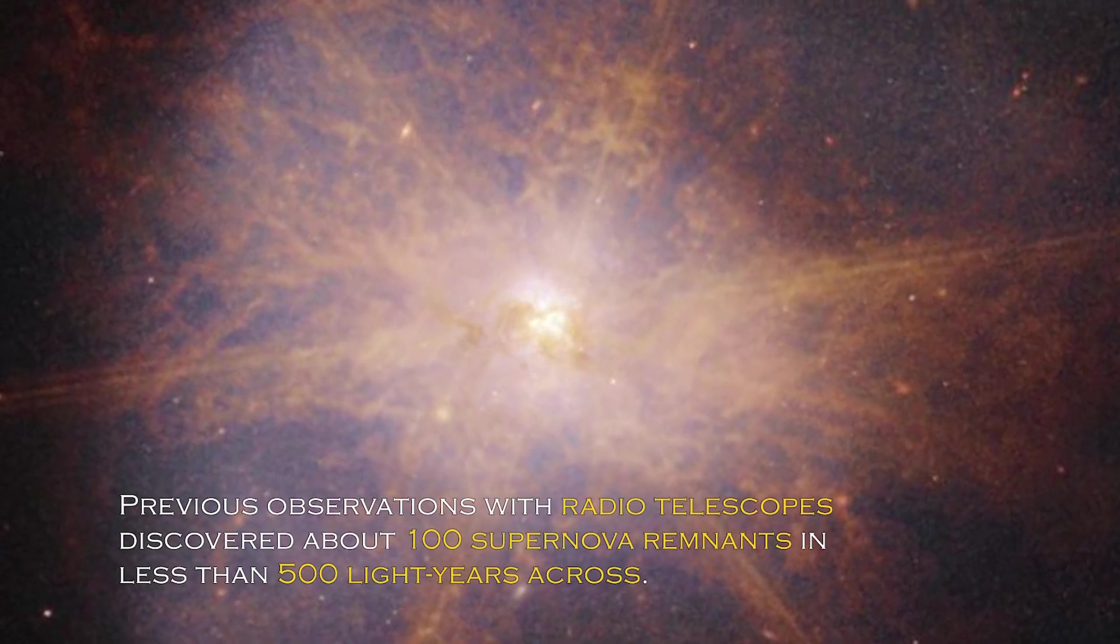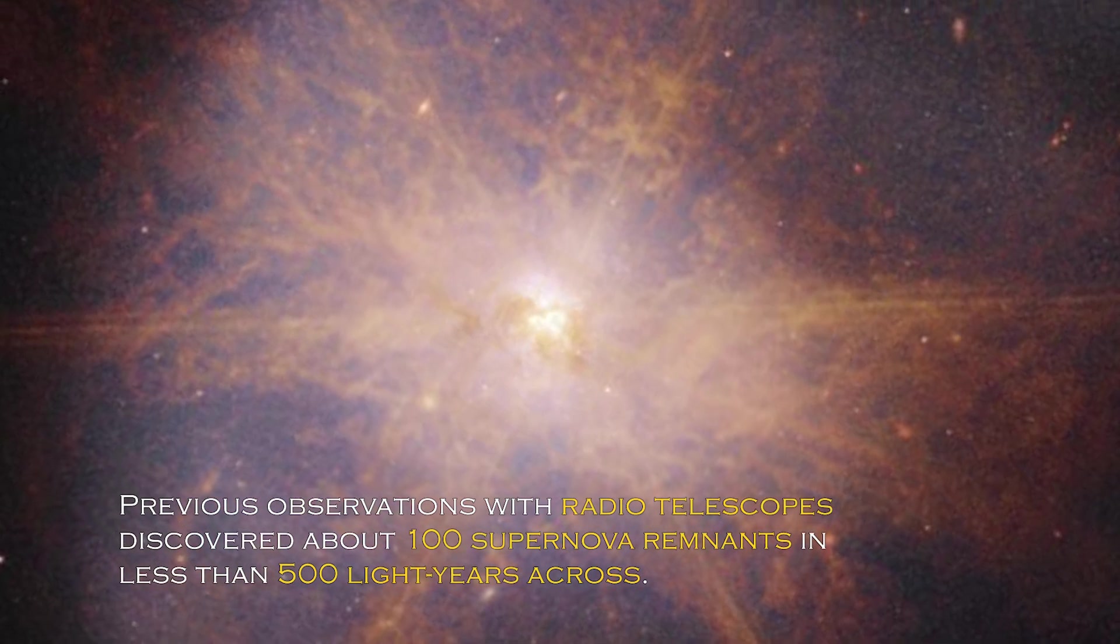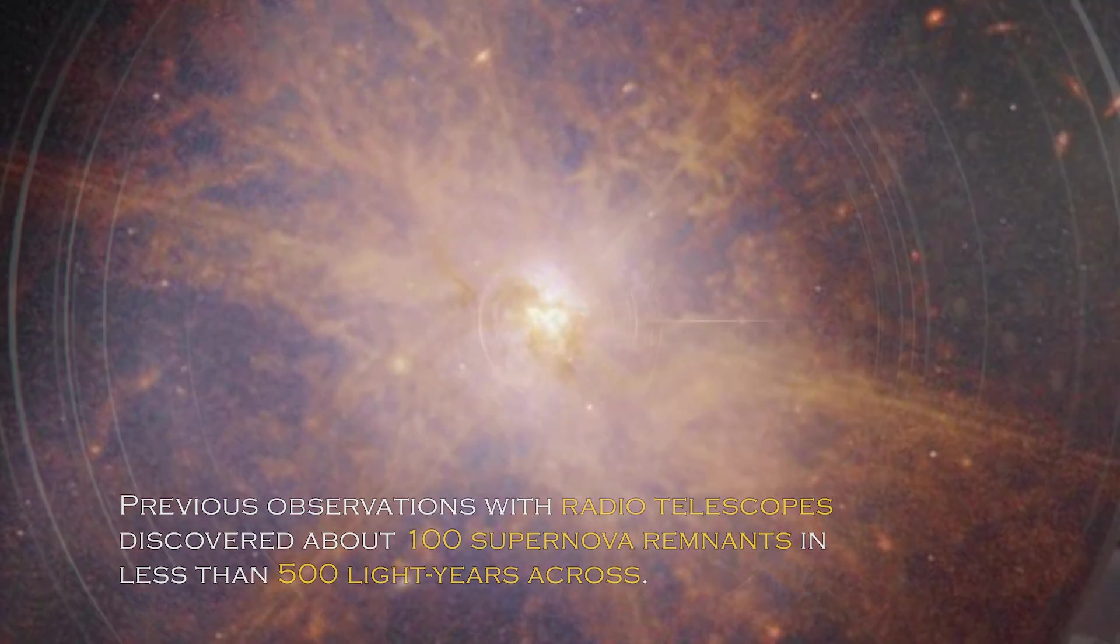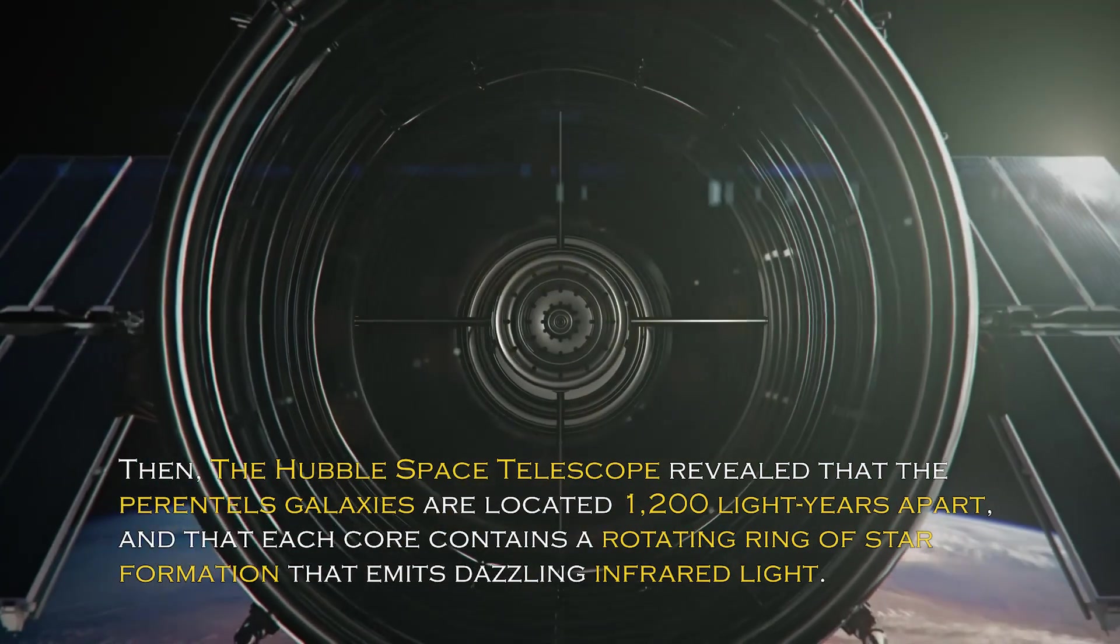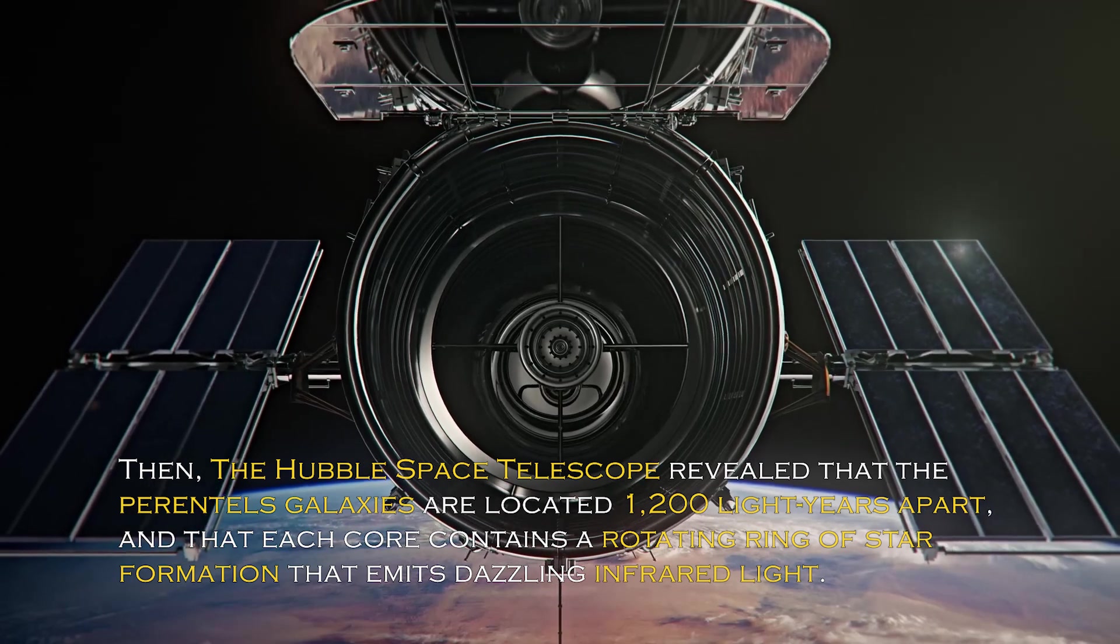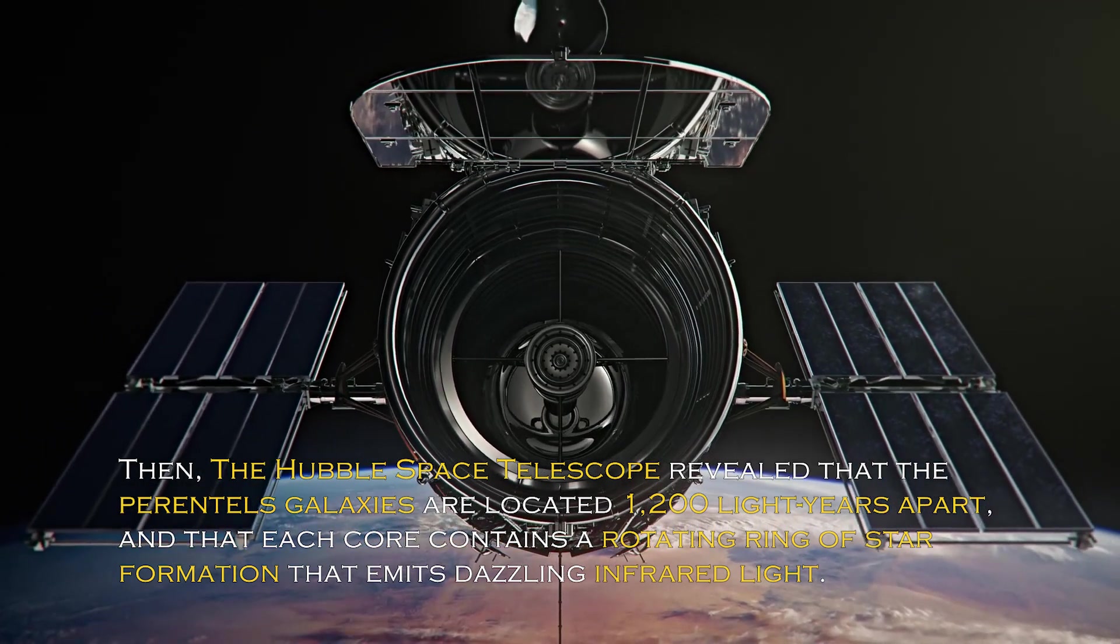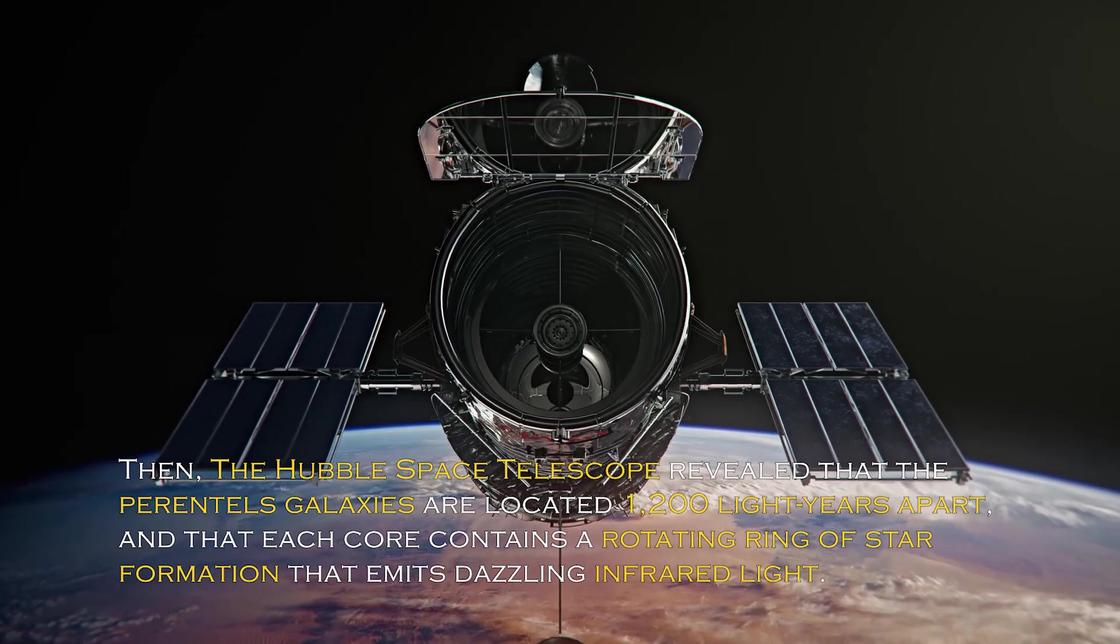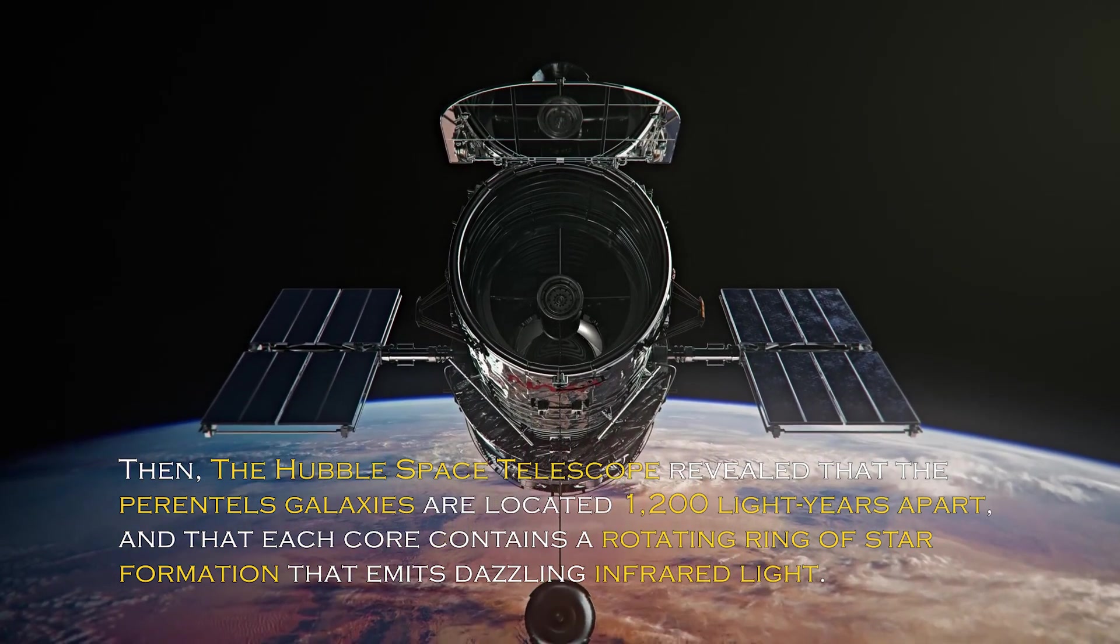Previous observations with radio telescopes discovered about 100 supernova remnants in less than 500 light-years across. Then, the Hubble Space Telescope revealed that the parent galaxies are located 1,200 light-years apart, and that each core contains a rotating ring of star formation that emits dazzling infrared light.